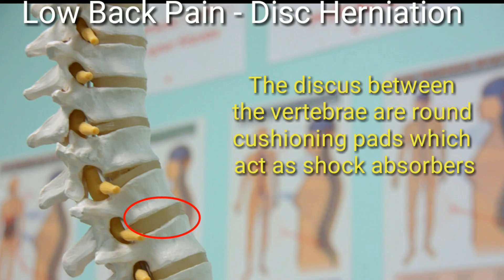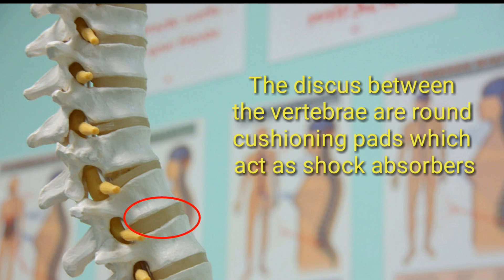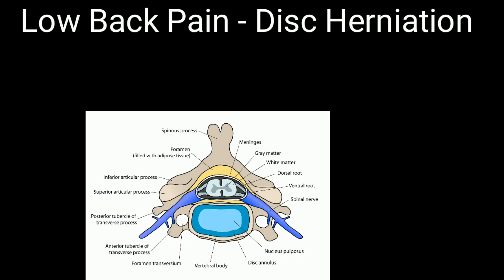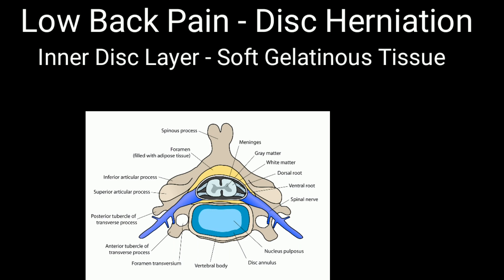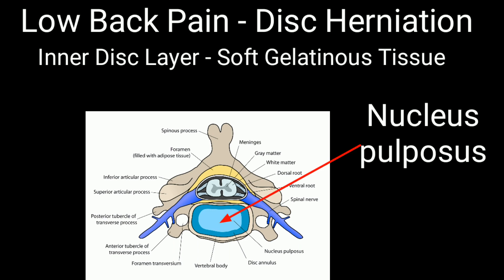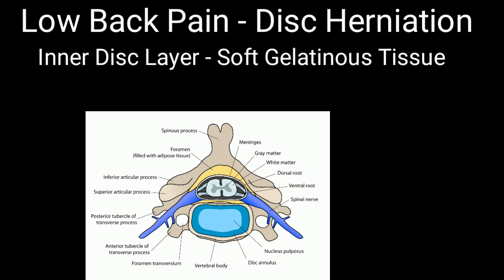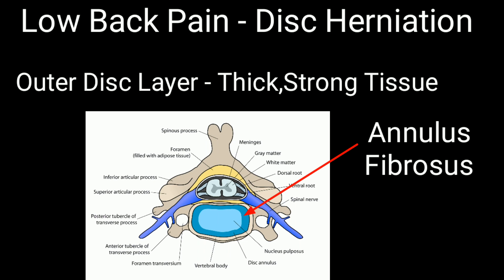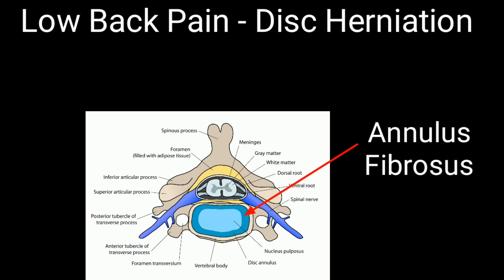The discs between the vertebrae are round cushioning parts which act as shock absorbers. The inner disc layer is soft gelatinous tissue called the nucleus pulposus. The outer disc layer is thick, strong tissue called the annulus fibrosus.